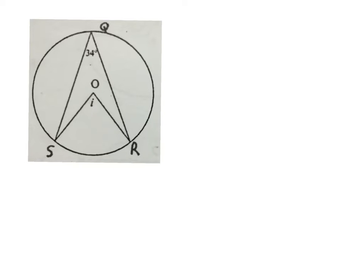In this question, they are telling me that O is the center of the circle. S, R and Q are on the circumference. That angle there is 34 degrees. And we have to find the value of I. Which is right. I equals to 68 degrees. Angle at center is twice angle at circumference.